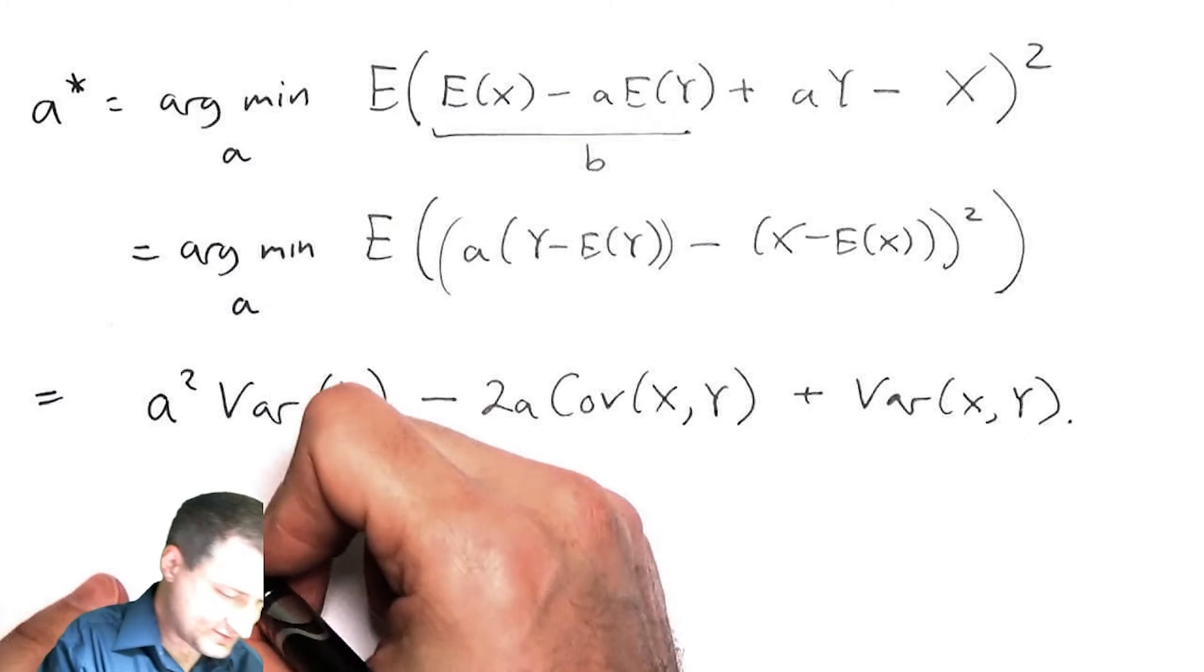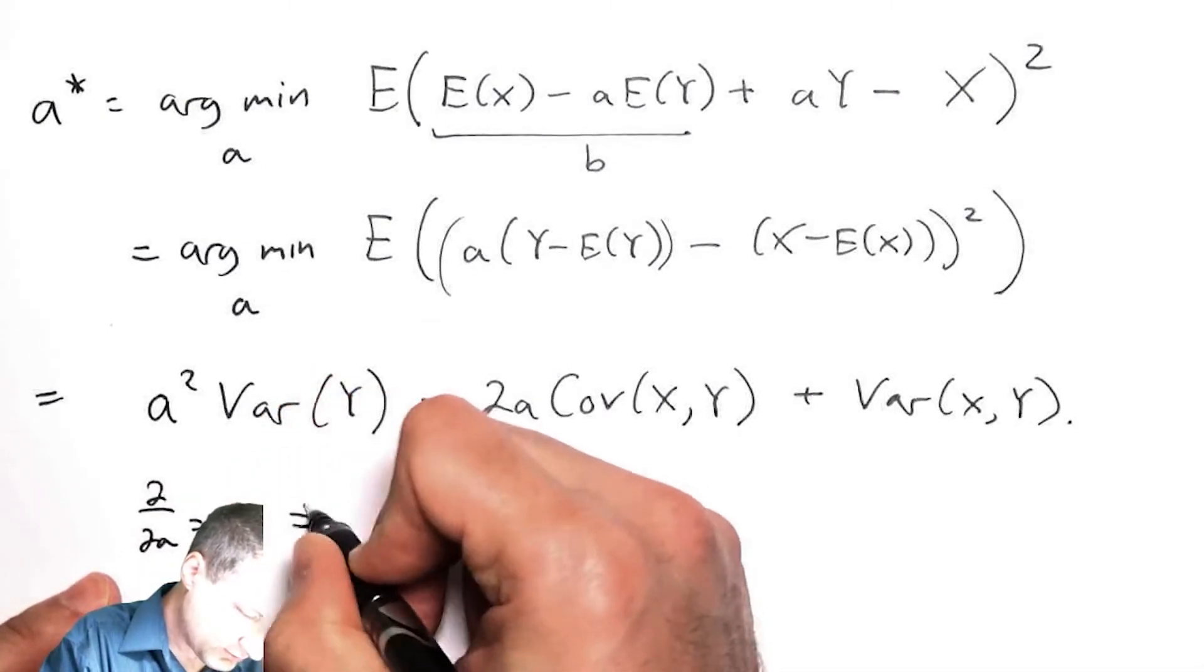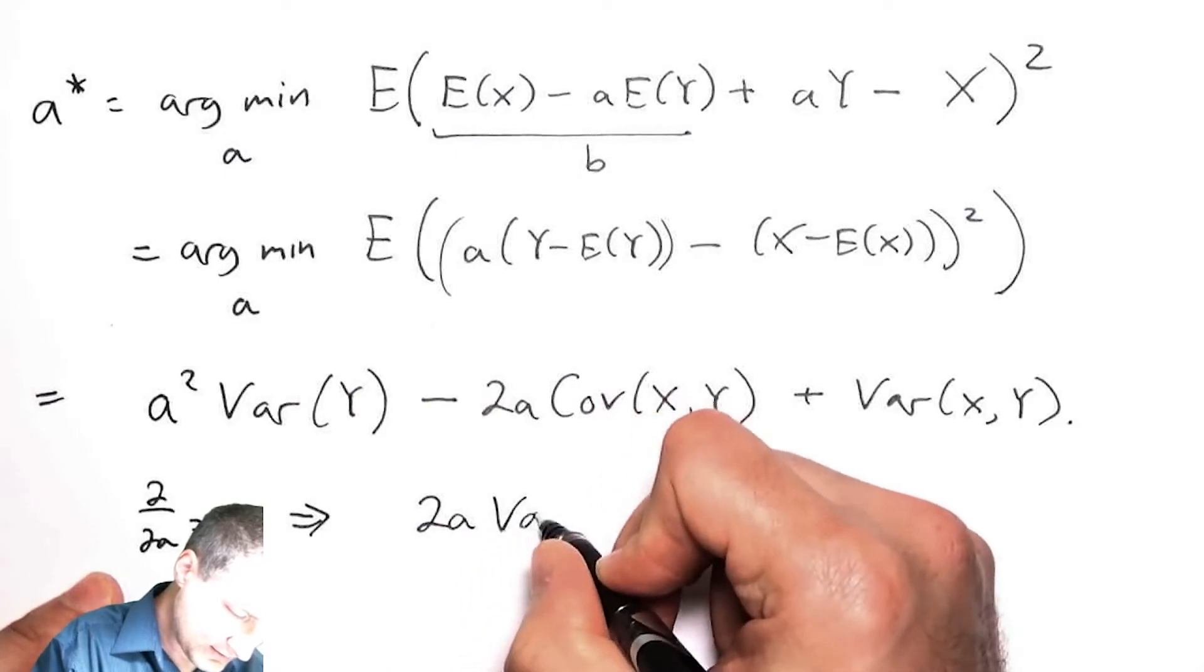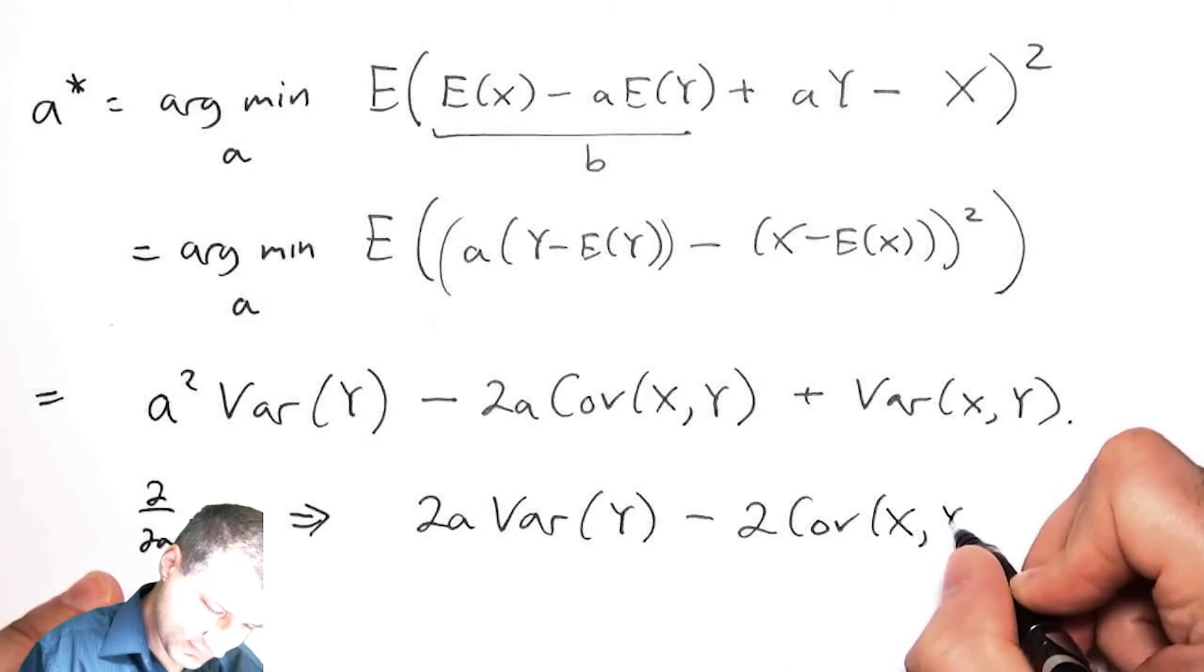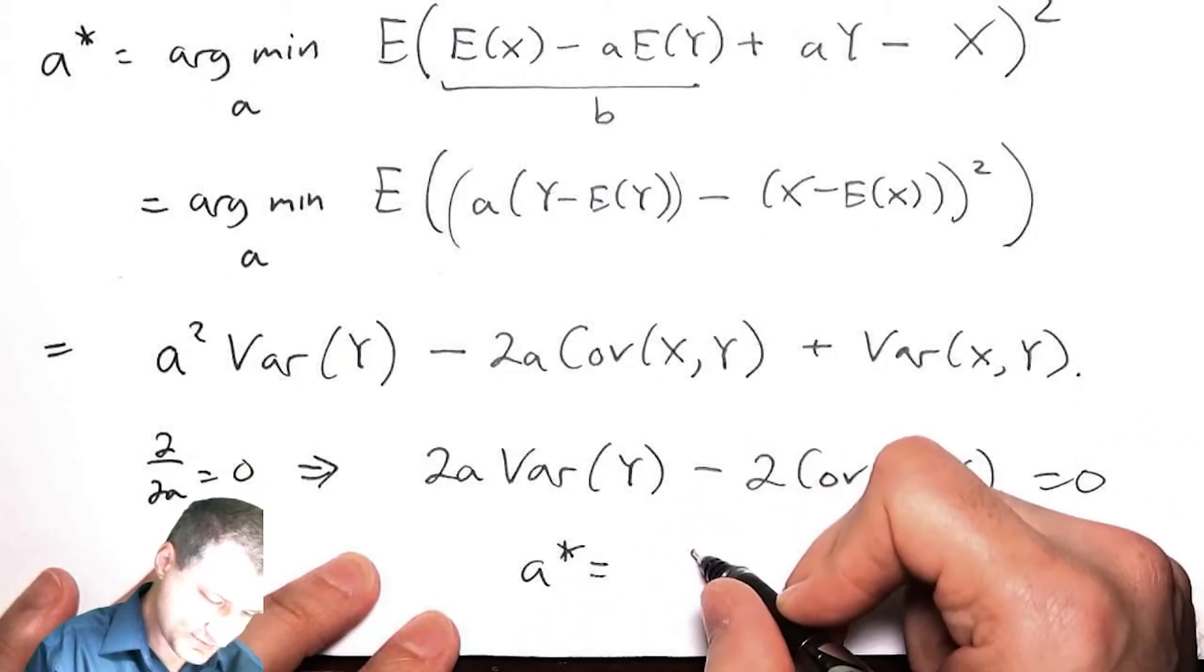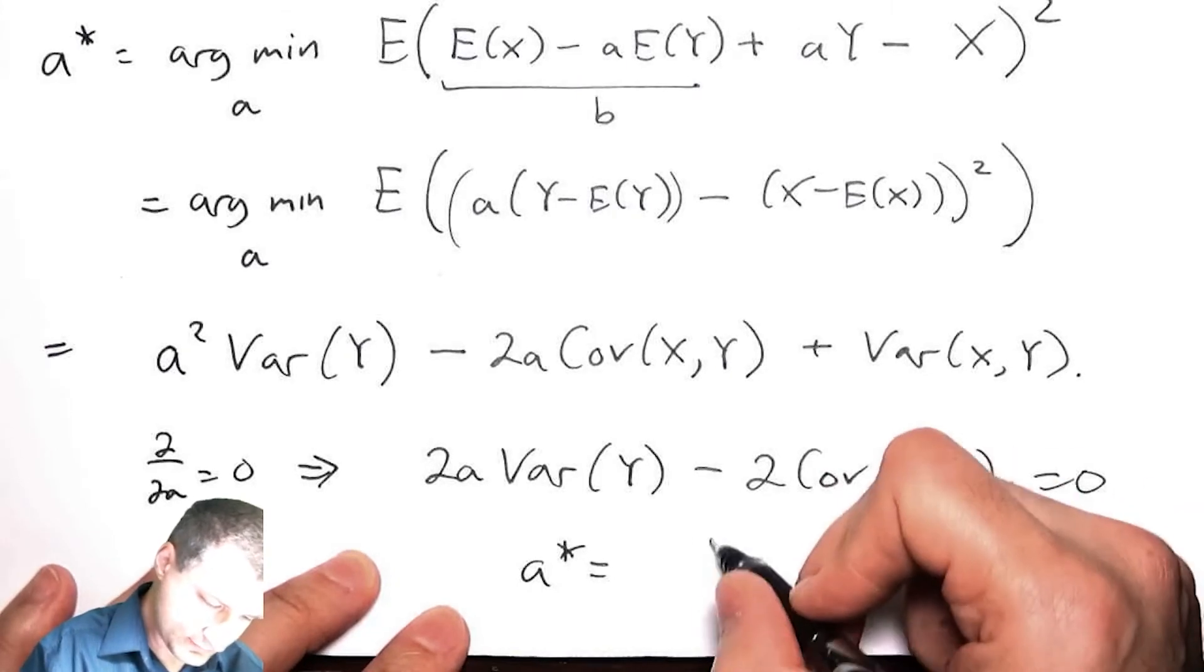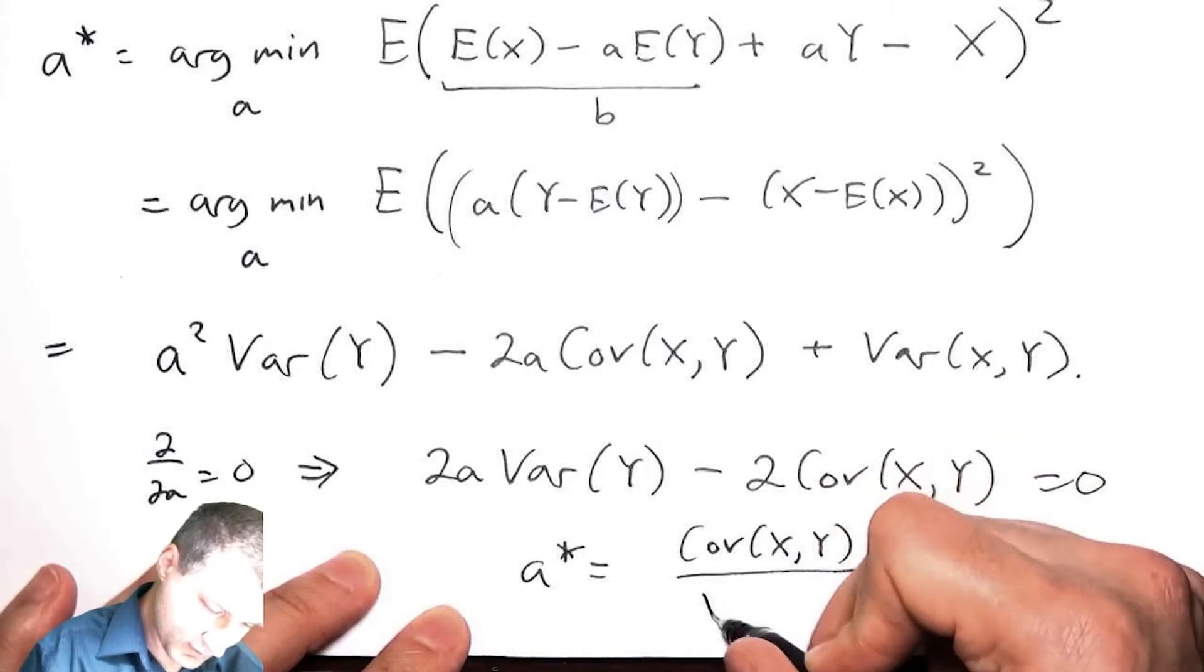And now I'm going to minimize this with respect to a. So I take the derivative with respect to a and set it equal to zero: 2a·Var(Y) - 2·Cov(X,Y) = 0. So that tells me that my a* is going to be Cov(X,Y) / Var(Y).